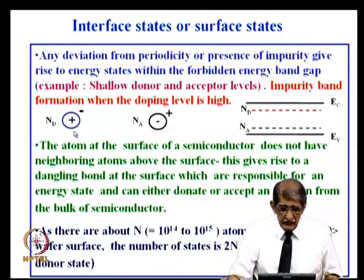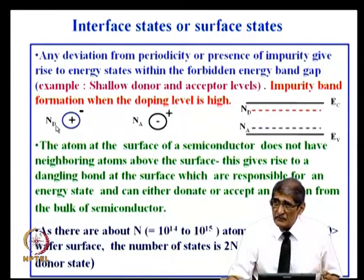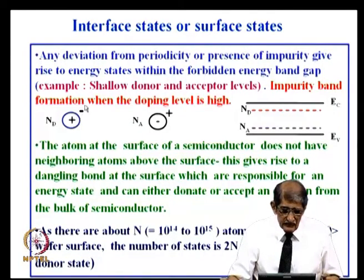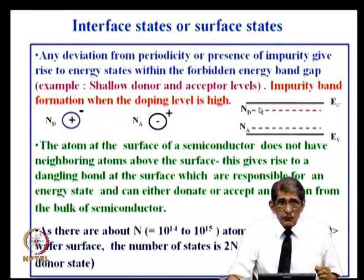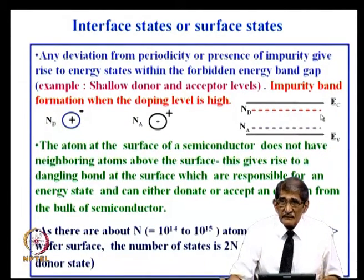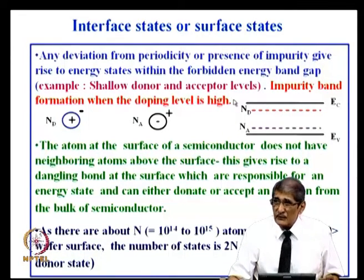A donor is a fifth-group element which has one valence electron — shown here — and the core is a plus charge. This fifth electron of the fifth group revolves around the parent atom and is very loosely bound. So even with very small energy, even at room temperature, this electron can be removed from its parent atom and go to the conduction band. When you put the energy level corresponding to the donor level, a shallow level implies you can raise electrons from this donor level to the conduction band with very small energy — from about 50 milli-electron volts — that is called a shallow donor.